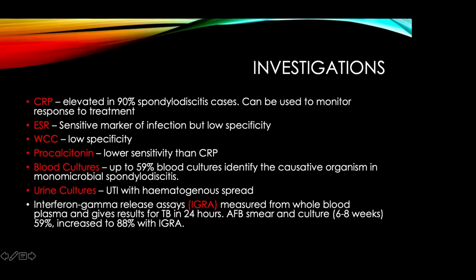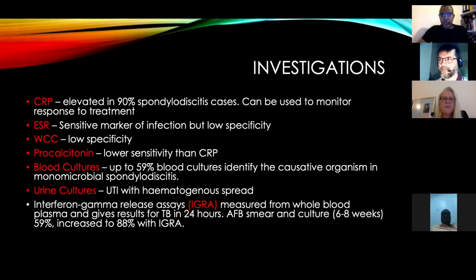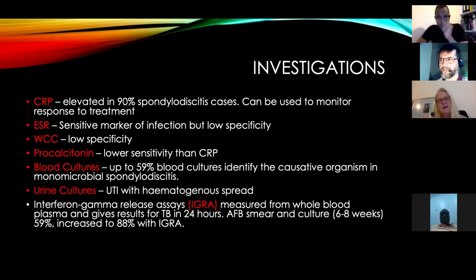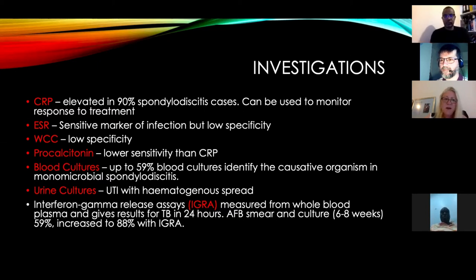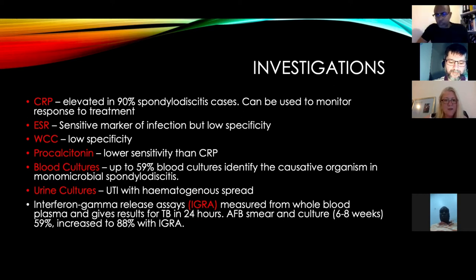For investigations, CRP is the mainstay — elevated in about 90 percent of spondylodiscitis cases and a very good marker to assess response to treatment. ESR is also a sensitive marker but not as specific. White cell count is not very specific. Procalcitonin is not very useful. You want at least three sets of blood cultures — up to 59 percent will identify the causative organism in monomicrobial spondylodiscitis. Urine cultures if considering hematogenous spread. Interferon gamma release assays can give a TB result in 24 hours; acid-fast bacilli smear and culture take six to eight weeks with 59 percent sensitivity, improved with IGRA.